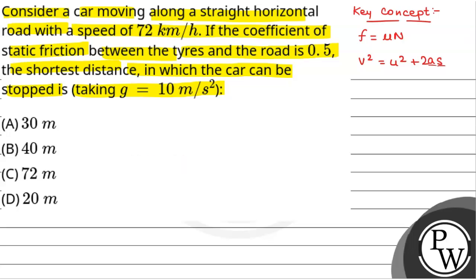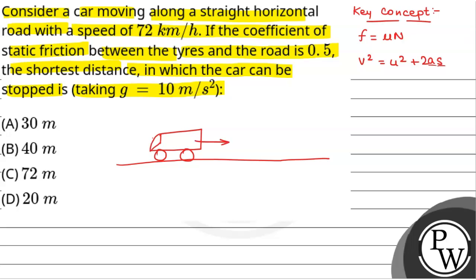Now, suppose this is a straight horizontal road and the car is moving on this road. Let us assume that this is the car. The car is moving on this road. The initial speed of the car is given as u equal to 72 km per hour, and the coefficient of static friction between the tyres of the car and the road is mu equal to 0.5.